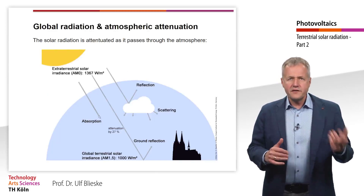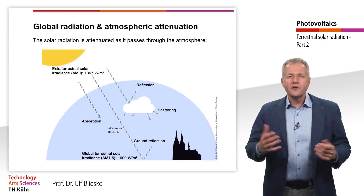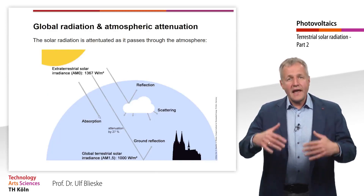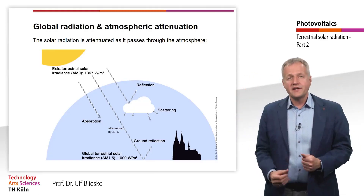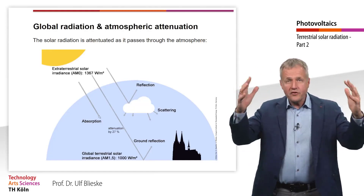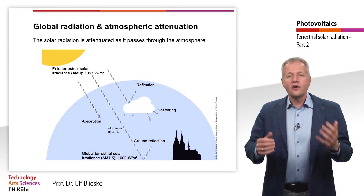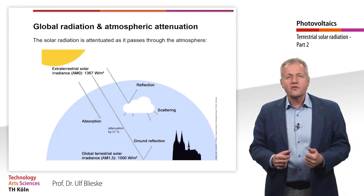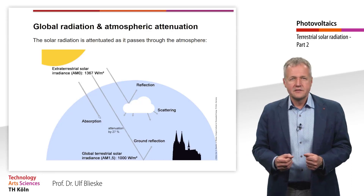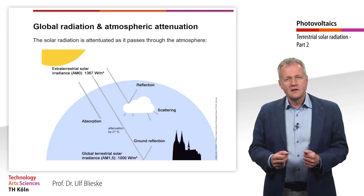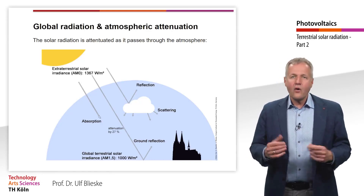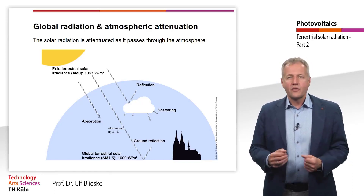In the previous teaching unit, we learned that the average extraterrestrial solar irradiation reaching the outer atmosphere of the Earth is 1367 Watt per square meter. These are the air mass zero, or AM0, conditions.